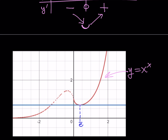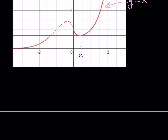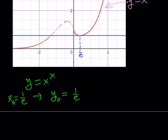So at x equals 1 over e, this function has a minimum. But what is the minimum value? You can just plug it in. y equals x to the power x, so if x equals 1 over e, then the y value is (1/e) to the power (1/e). Since 1/e equals e to the power negative 1, you can also write this as e to the power negative 1 over e. And that's a value that is less than 1. Notice that my y value here is going to be less than 1.